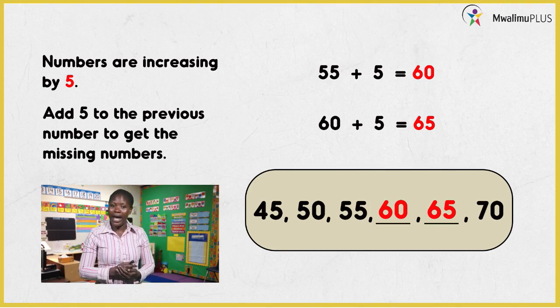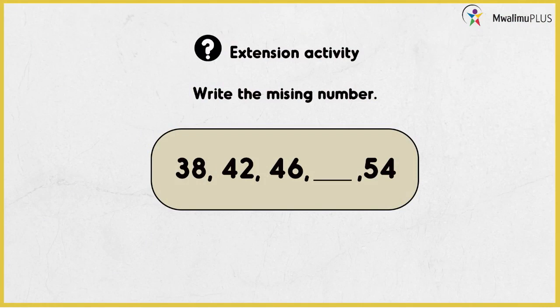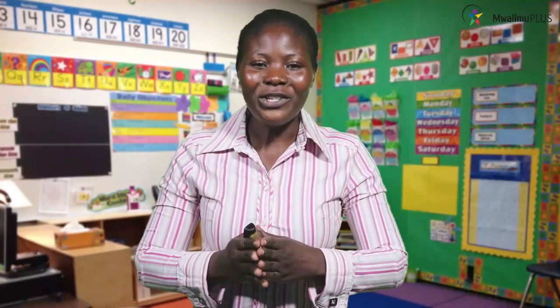Now, my dear learner, I want to leave you with one number pattern. Please write the missing number: 38, 42, 46, dash, 54. To get the missing number, first identify the rule — ask yourself, by how many are these numbers increasing? Then add that particular number to the previous number and fill in the missing number. It's very easy — don't fear, do it right. I'm happy that you are keen, and I hope that in the next lesson you will be there so we can work out missing numbers in number patterns. See you soon in the next lesson. Bye!